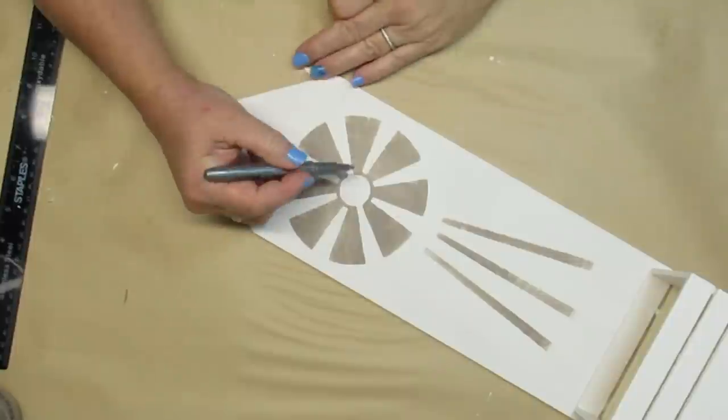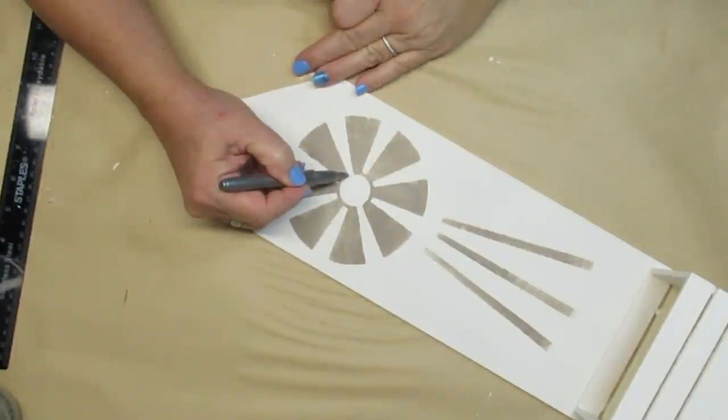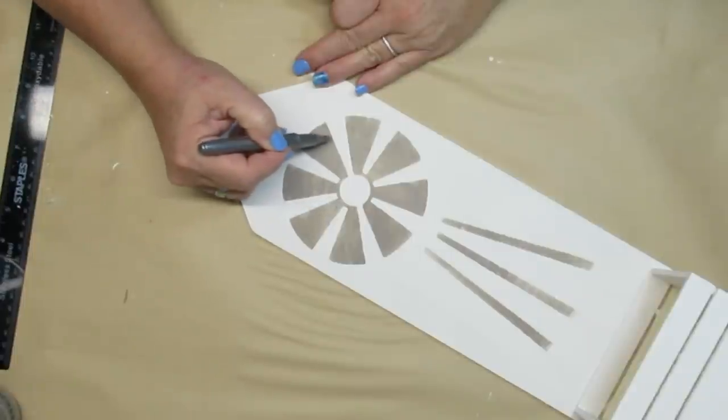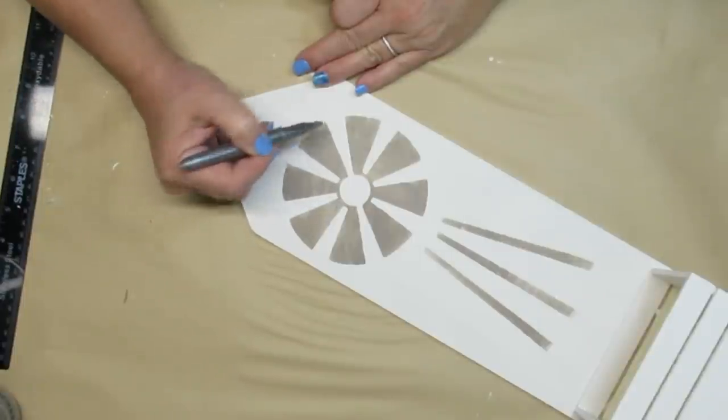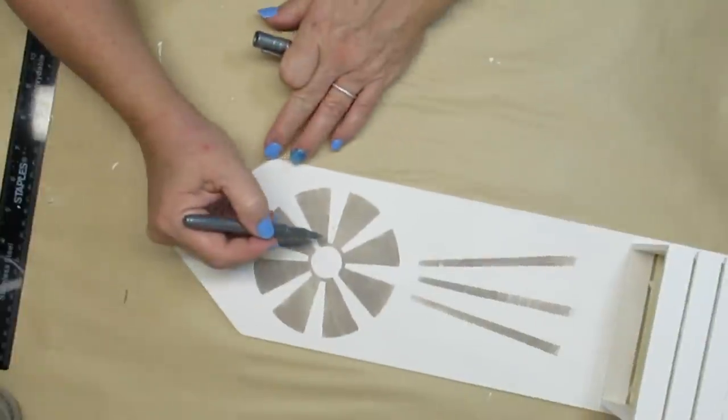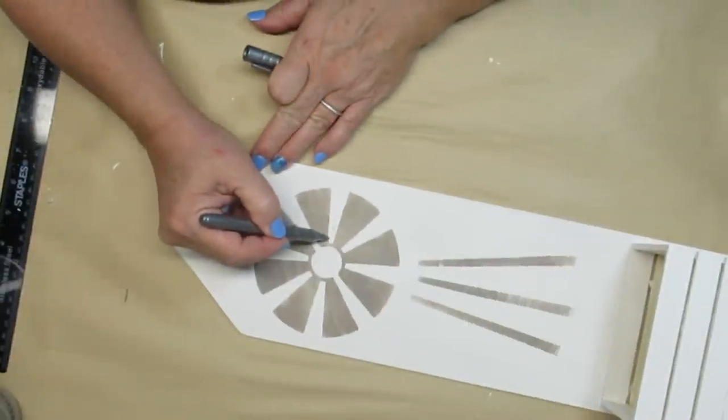To add more dimension and character to the windmill I'm going to use this silver permanent marker and just draw a line on one side of the blade all the way around. I'll also do this for the legs down at the bottom.